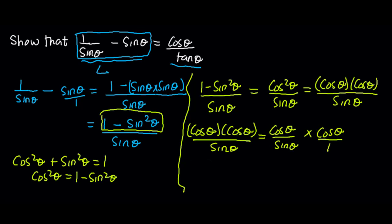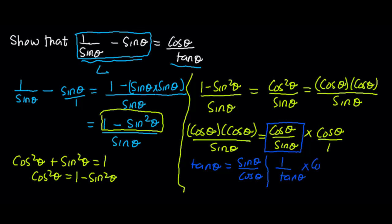And cos theta times another cos theta, all on sin theta, is the same as cos theta on sin theta times cos theta over 1. Now, generally, tan theta is equal to sin theta over cos theta. But over here we have the inverse of that, which is cos theta over sin theta. So, what it means is that cos theta over sin theta is 1 over tan theta, and this times cos theta. Hence, we end up getting cos theta over tan theta, which is the same as the right hand side.